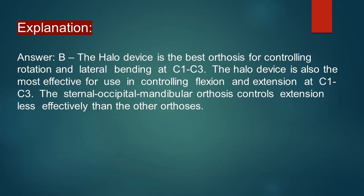The halo brace is the best orthosis for controlling rotation and lateral bending at the cervical spine. The halo device is also the most effective for controlling flexion and extension at the region of C1 to C3. On the other hand, the sternal occipital mandibular orthosis controls extension less effectively than the other orthoses.